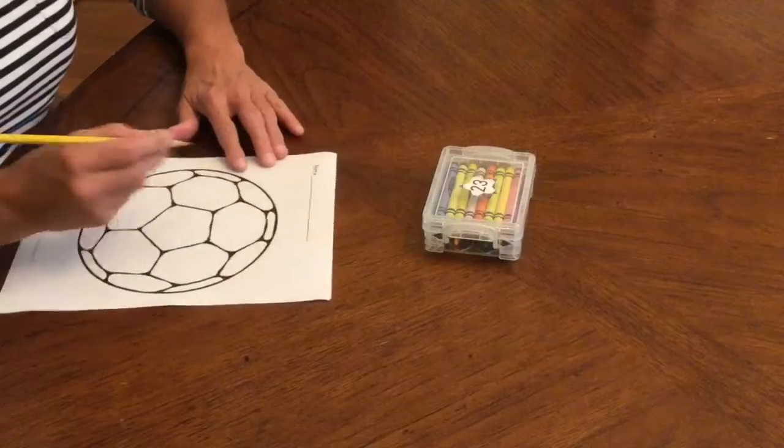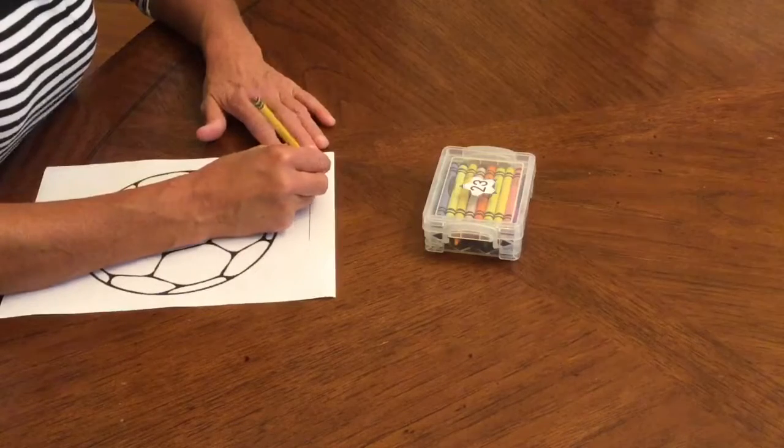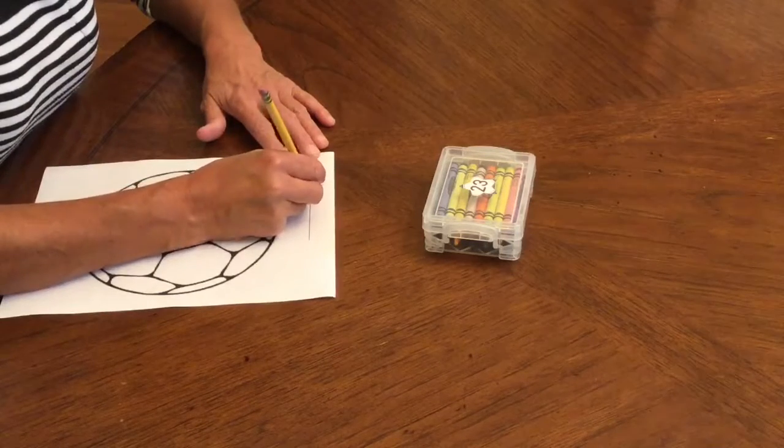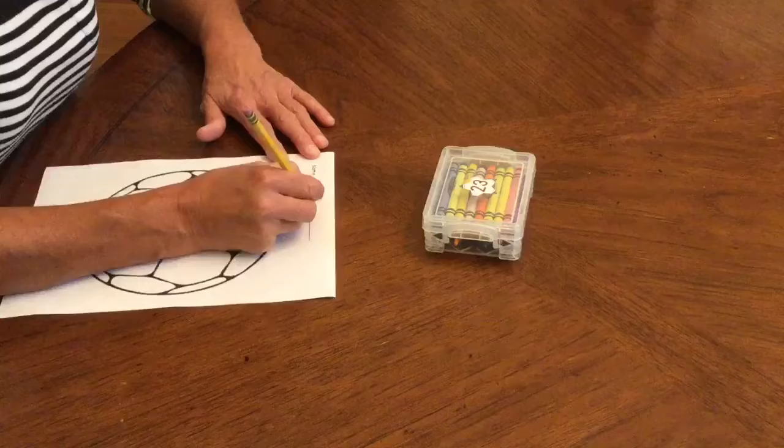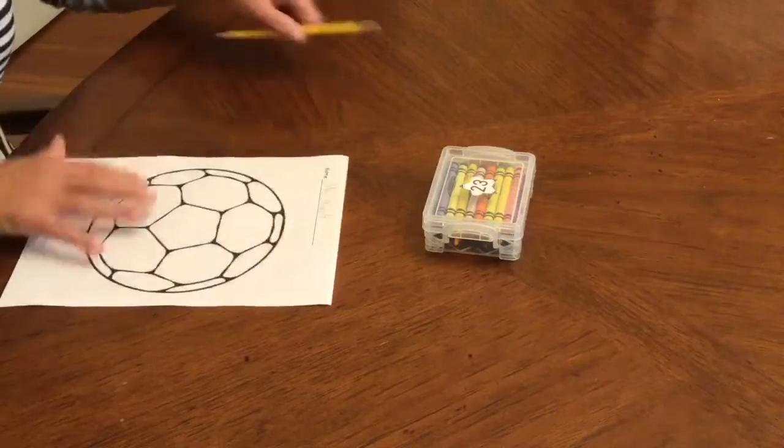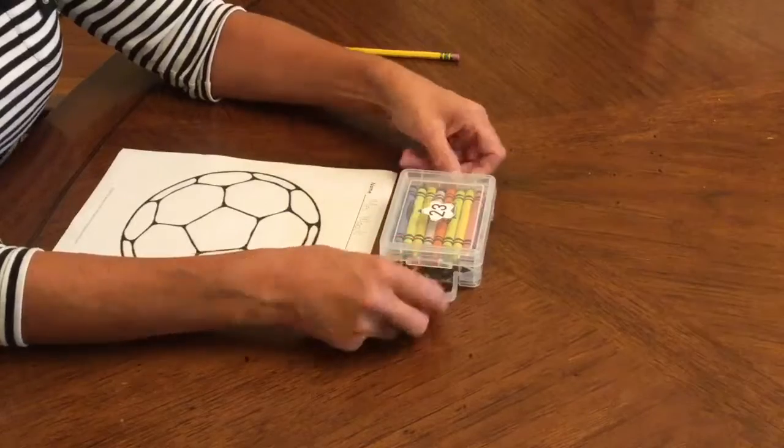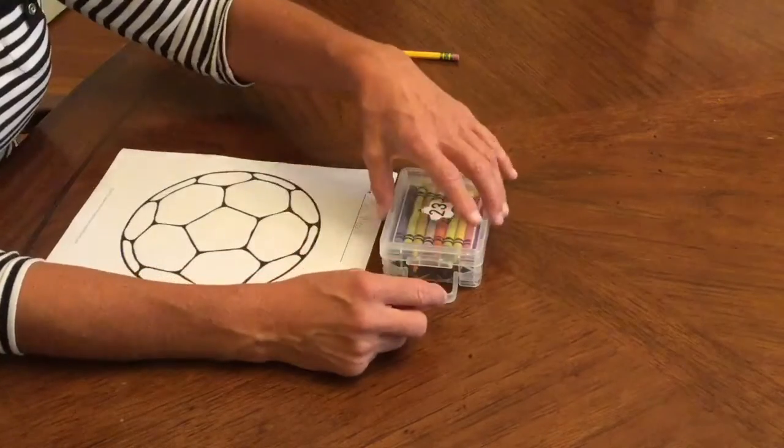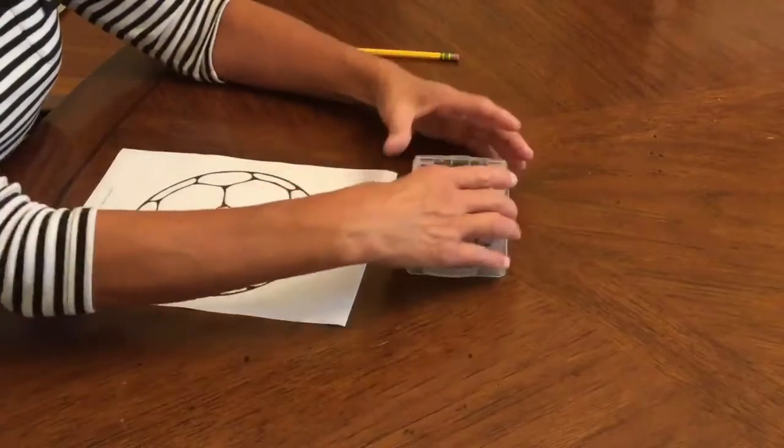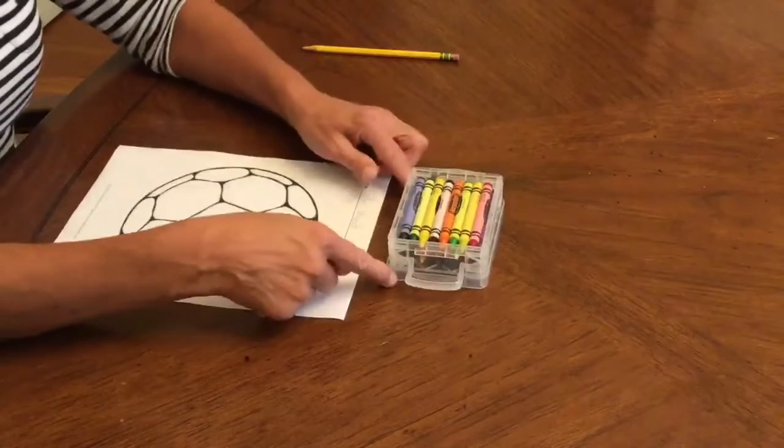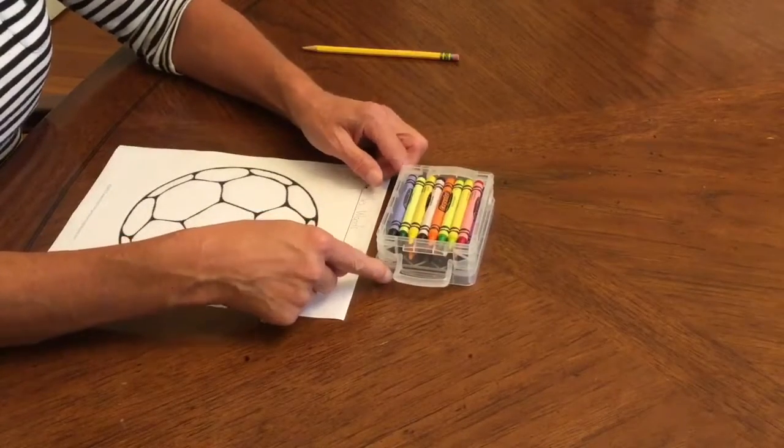The first thing you want to do is put your name on your paper. So I'm going to write Mrs. Woods. Now you are going to be coloring a soccer ball. Your crayon box is here. You open up the latches, take the lid off, and put your crayon box on top of your lid so you don't lose your lid.